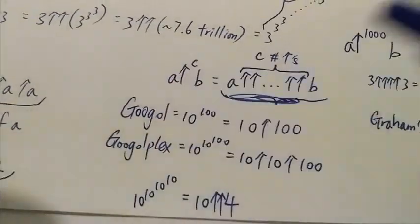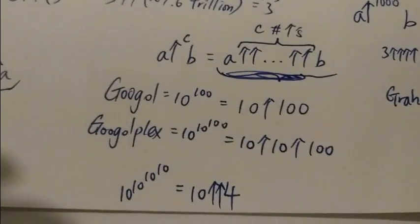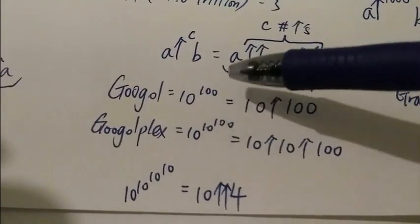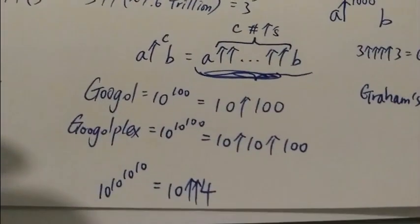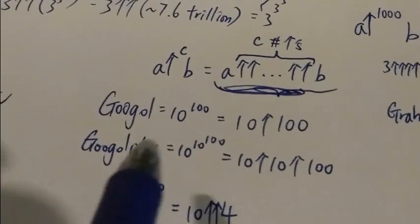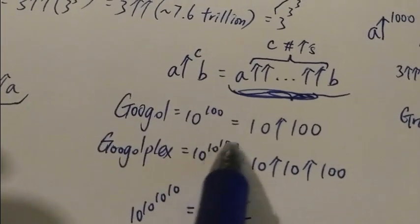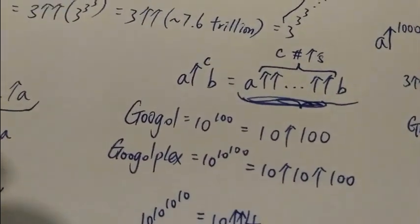And then let's look at some ways to write big numbers with the up arrow notation. For example, the googol, which is 10 to the power of 100, you can write it as 10 arrow 100. The googolplex, you can write it as 10 arrow 10 arrow 100. Basically, kind of similar to this thing here, you just use up arrow instead.